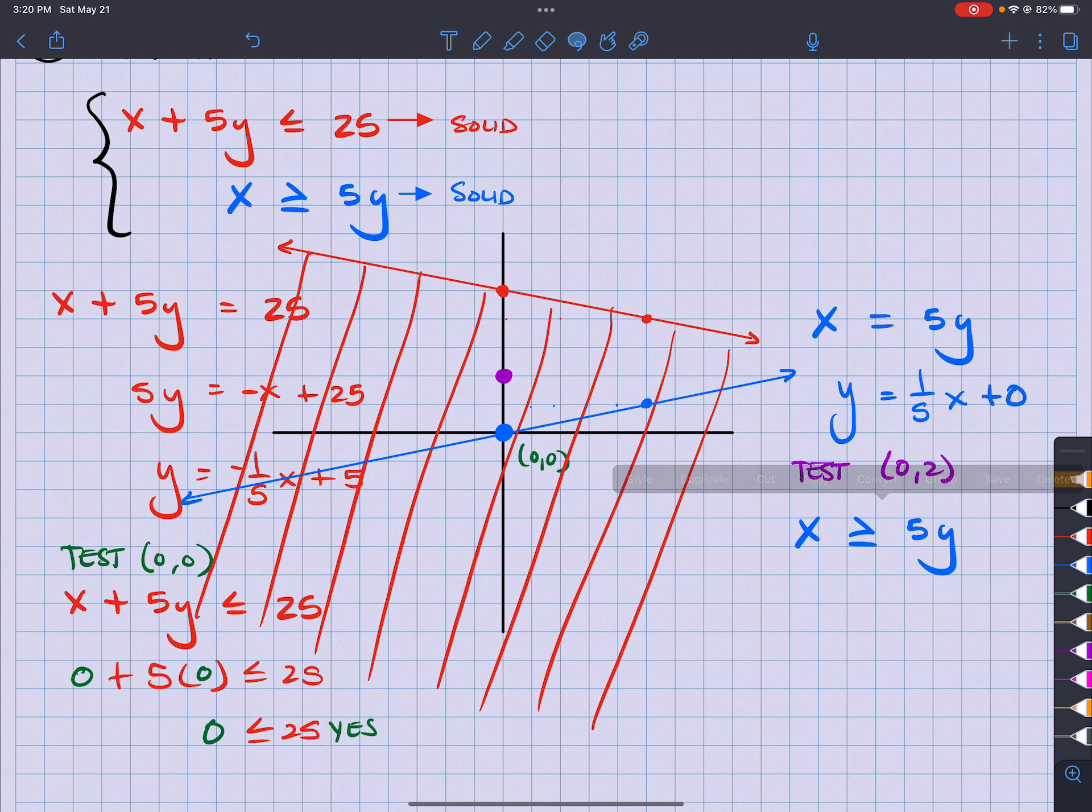Boom right there. So is 0 greater than or equal to 5 times 2.